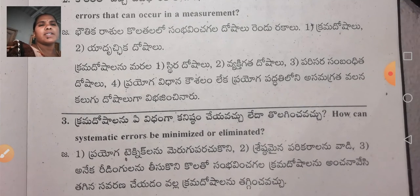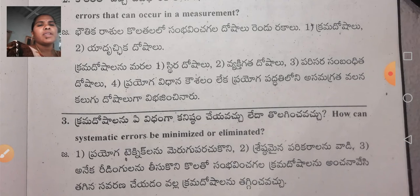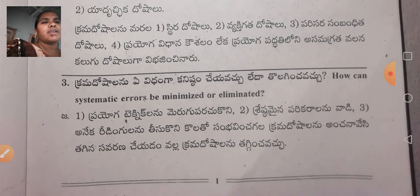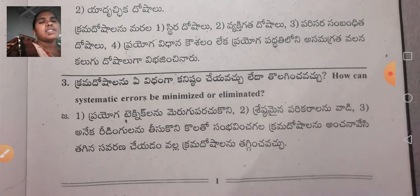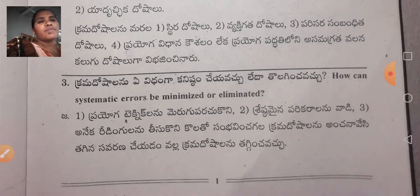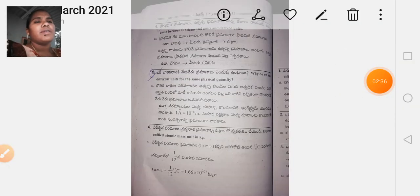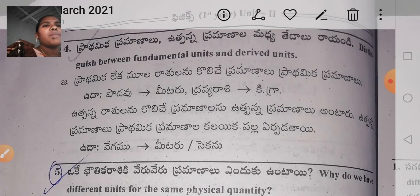The next important questions are: How can systematic errors be minimized or eliminated? And: Distinguish between fundamental units and derived units.